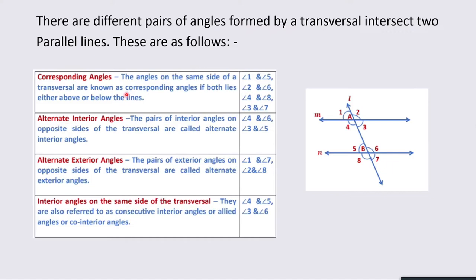First, corresponding angles: angles on the same side of a transversal are called corresponding angles if both lie either above or below the lines. The corresponding angle pairs are: angle 1 and 5, angle 4 and 8, angle 2 and 6, and angle 3 and 7. The property of corresponding angles states: if a transversal intersects two parallel lines, then each pair of corresponding angles is always equal. So angle 1 = angle 5, angle 2 = angle 6, angle 4 = angle 8, and angle 3 = angle 7.